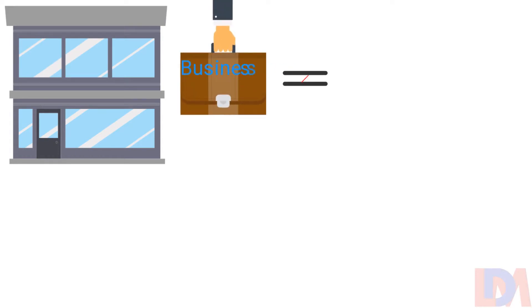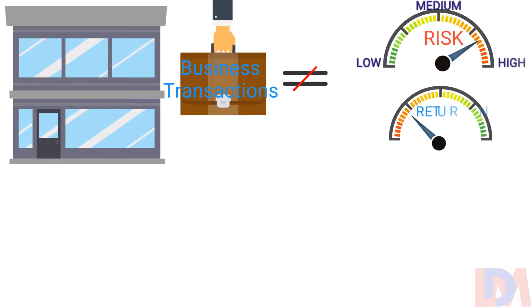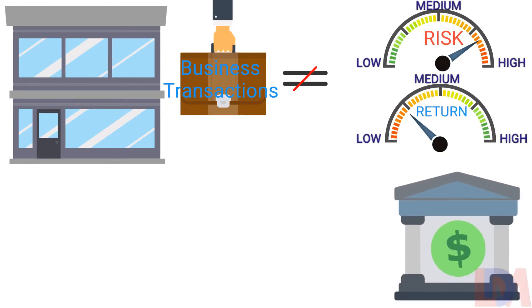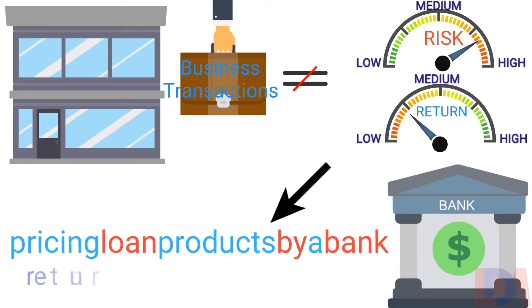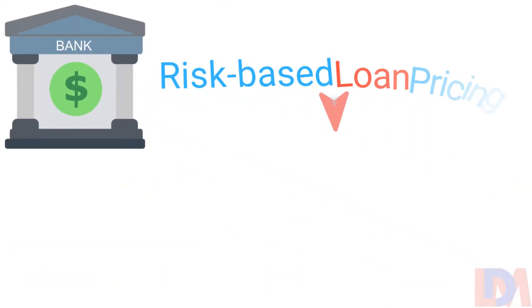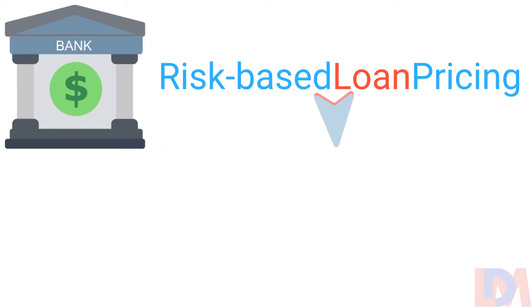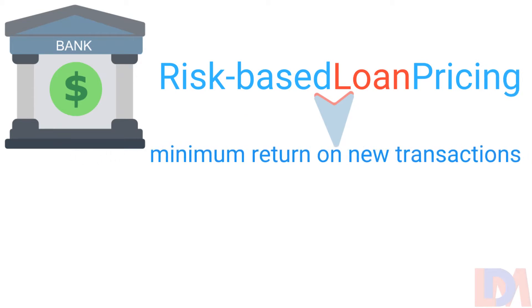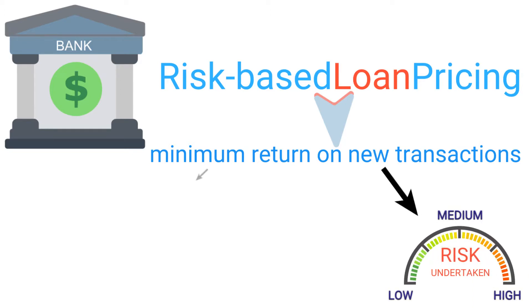In any business, there is no point in originating transactions that involve a great amount of risk for a tiny return. This holds equally good for pricing loan products by a bank, considering return on a risk-adjusted basis and the expected loss for the capital at risk. Therefore, banks should follow risk-based loan pricing with an objective of determining the minimum return on new transactions, in line with the risk undertaken as well as with the bank's target return.